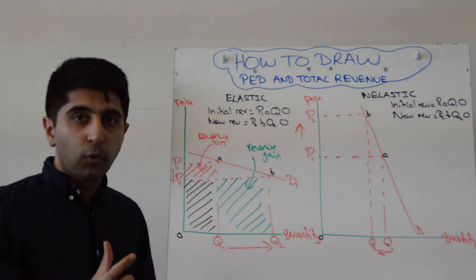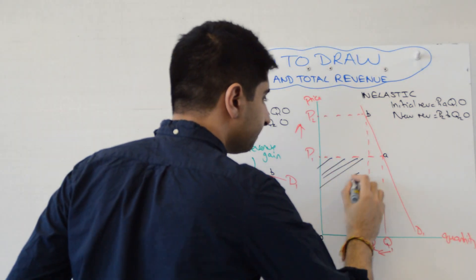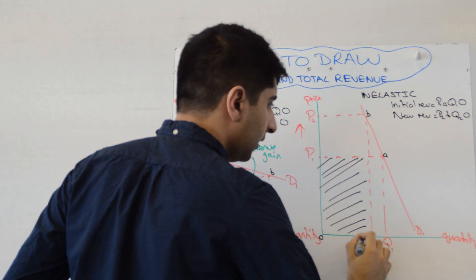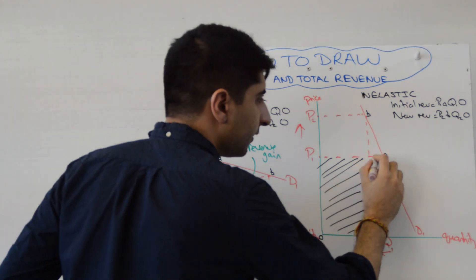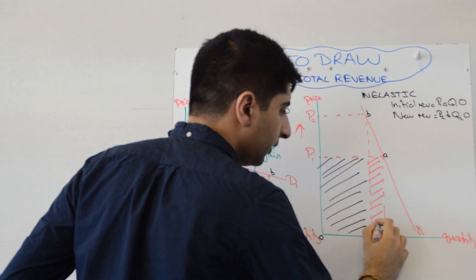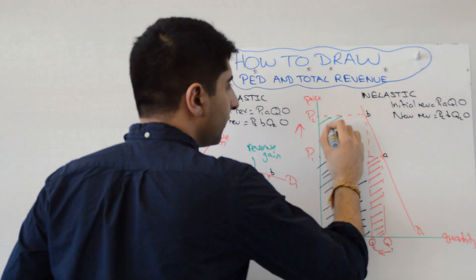Do the same thing. What bit of the revenue has remained in both instances? Well, this black bit has. Absolutely. Let's work out a revenue loss, which in this case is this little rectangle here. Whereas our revenue gain is a much bigger box in green.